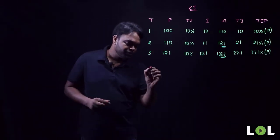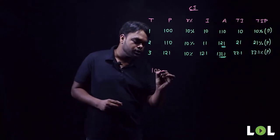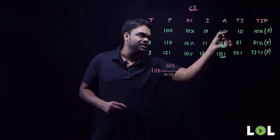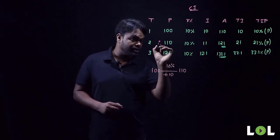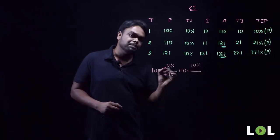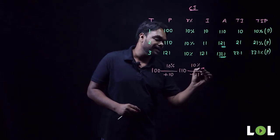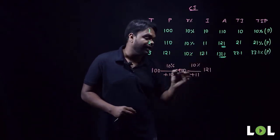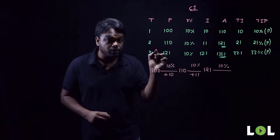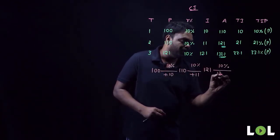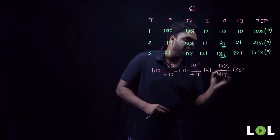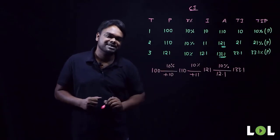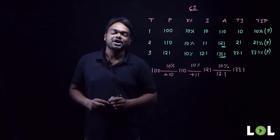We started with 100 rupees; applying 10 percent gives 10 rupees, making 110 at end of year one. In year two, 10 percent of 110 is 11 rupees, so 110 + 11 = 121 at end of year two. In year three, 10 percent of 121 is 12.1, so 121 + 12.1 = 133.1 at end of year three. Can you recall anything? Yes — compound interest is absolutely the same as successive percentage!